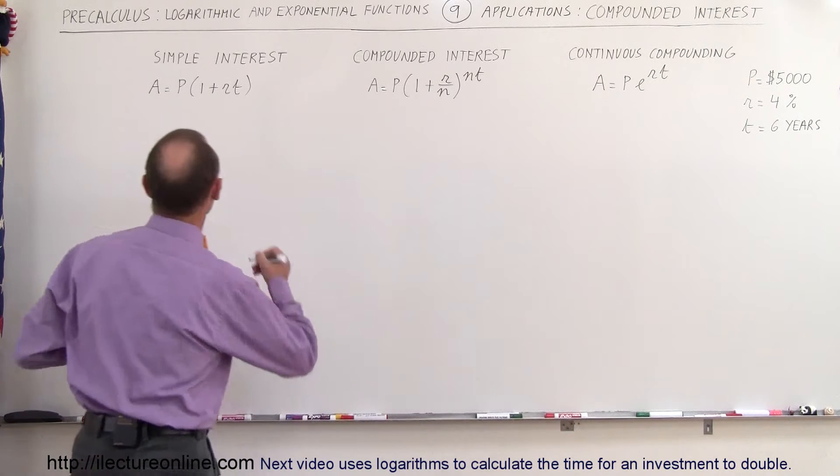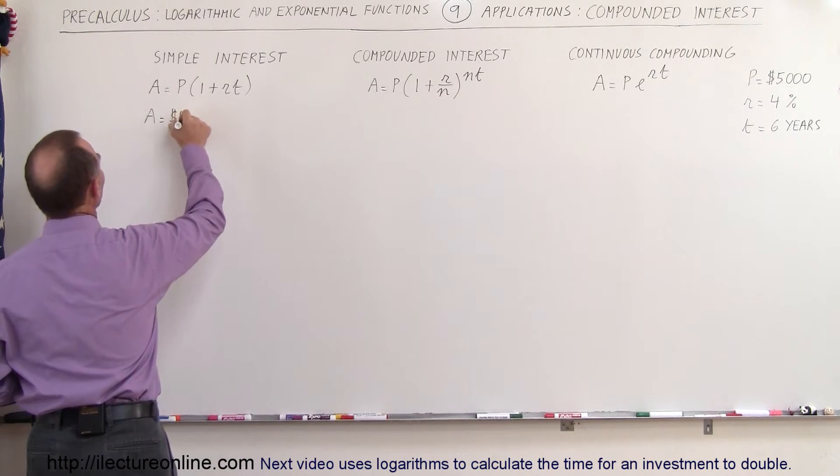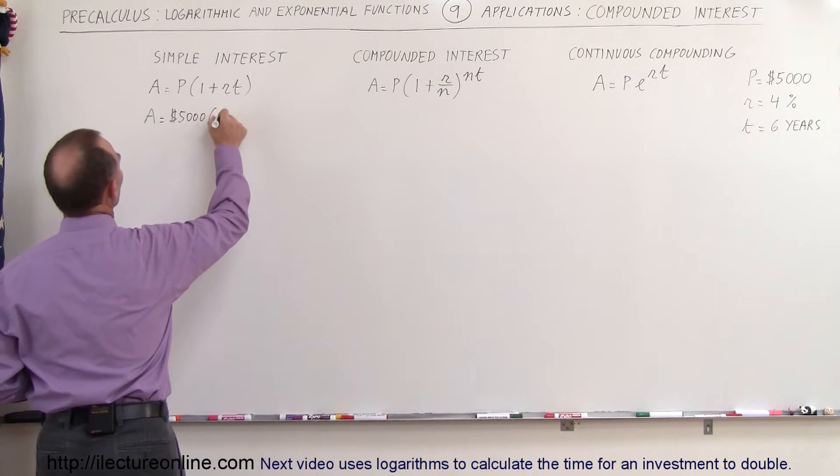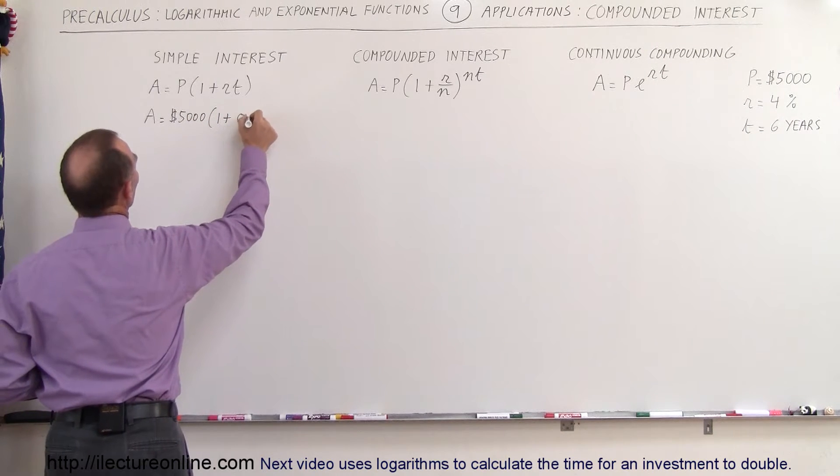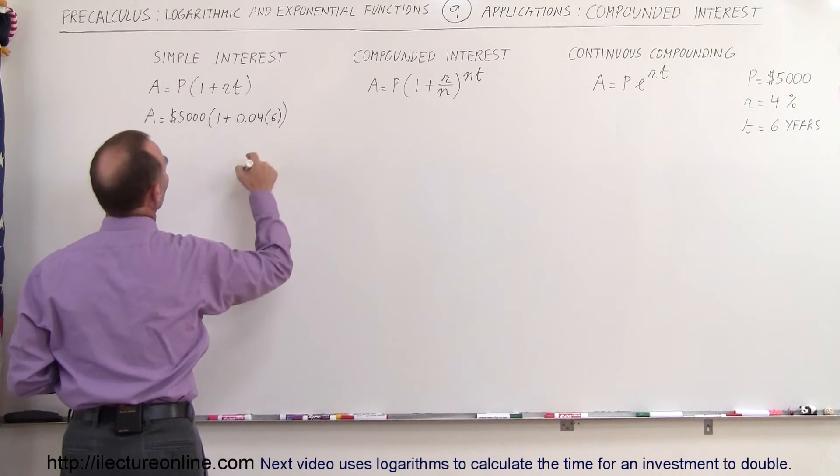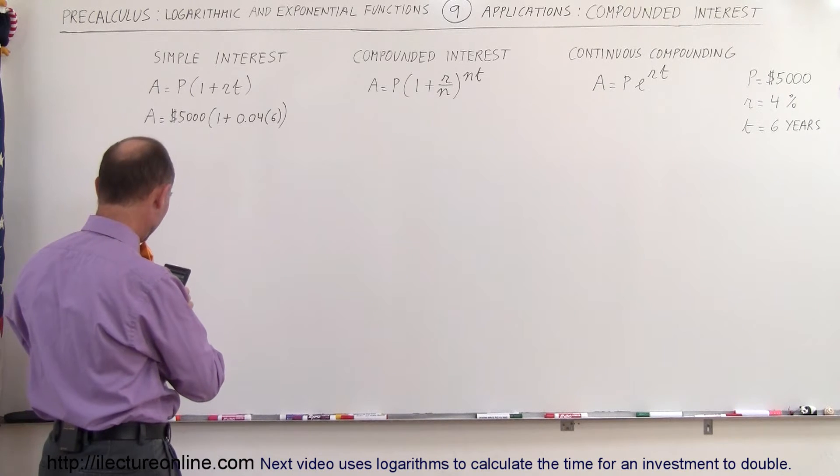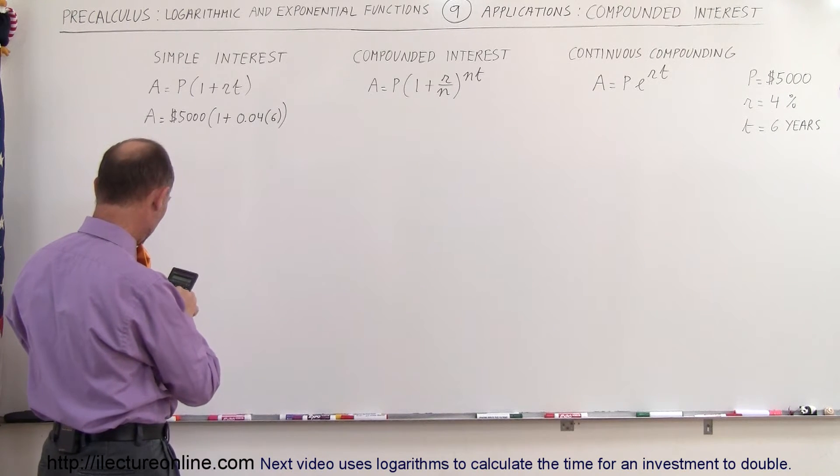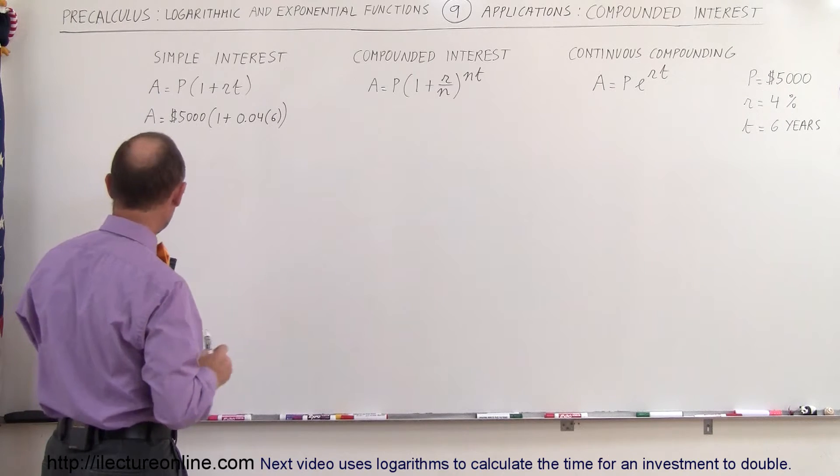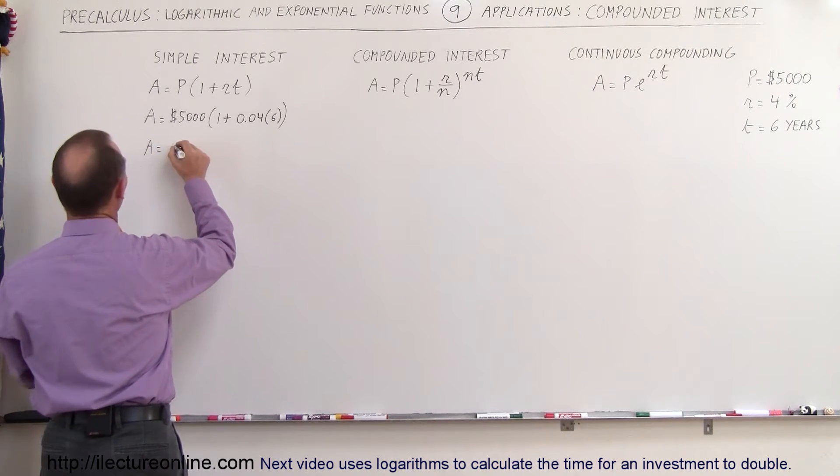So simple interest, you get the following result. The amount that you accumulate equals the initial principle of $5,000 times 1 plus the rate, which is 0.04, times the time, which is 6 years. So that would be 6 times 4, that's 24, that's 0.24. So we have 5,000 times 0.24, and you end up with a total of $6,200.